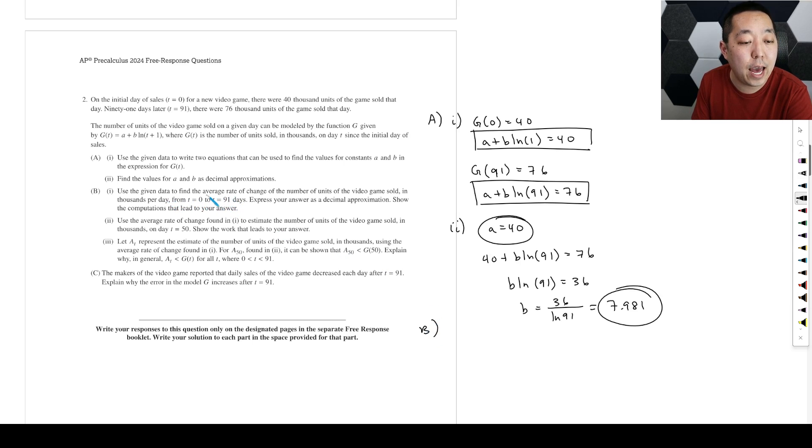B, use the given data to find the average rate of change in the number of units in the video game sold in thousands per day. Express your answer as a decimal approximation. Show the computation. So average rate is going to be, if you're going from zero to 91, it's literally going to be G of 91. It's this difference quotient. So G of 91 is the number there, which is 76. Minus, and then G of zero is 40, 40,000. Divided by 91.